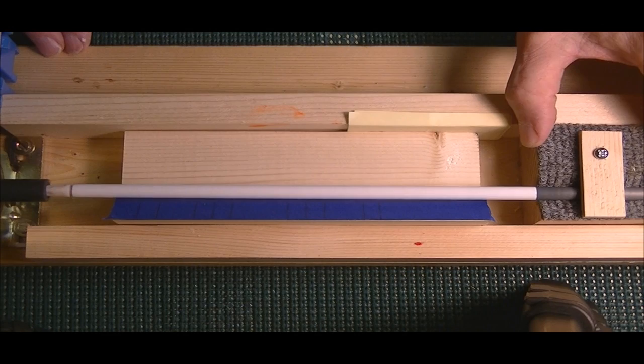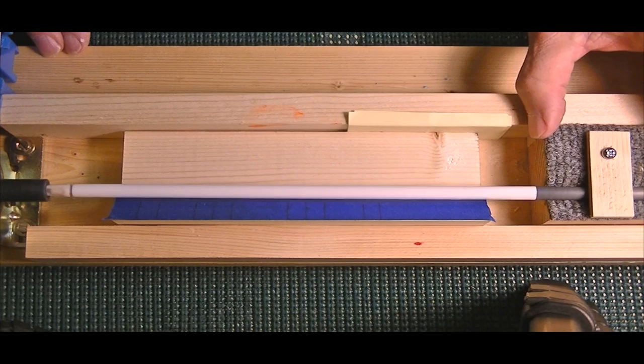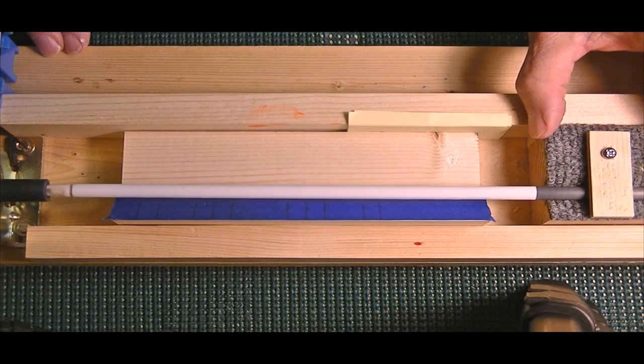I made a little jig that the arrow rides in. It's got a little V-notch cut in it with a little piece of carpet and a little bracket on top of it to keep the arrow from coming out that I can slide up and down wherever I want it.